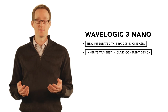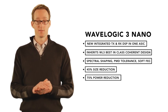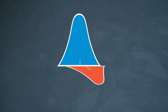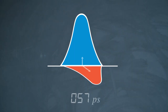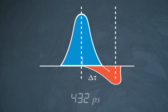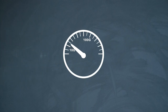The WaveLogic 3 Nano ASIC uses WaveLogic 3's industry-leading soft decision forward error correction for the best performance, and it keeps WaveLogic 3's 150 picoseconds of mean DGD tolerance for PMD compensation. This lets us deploy 100 gig coherent wavelengths over fiber that typically could only support up to 10 gig propagation.